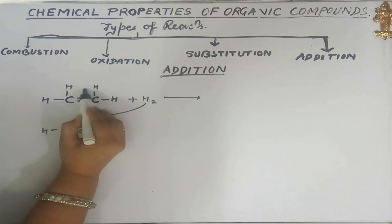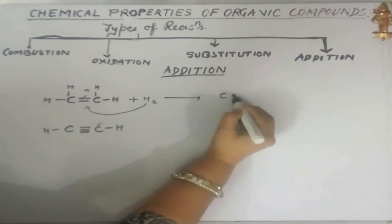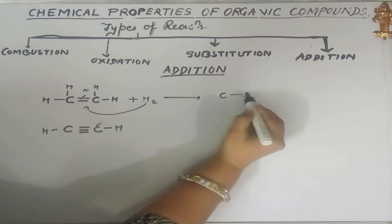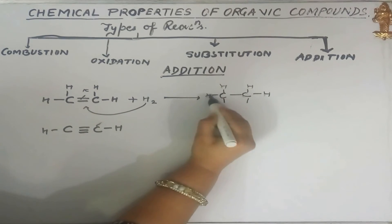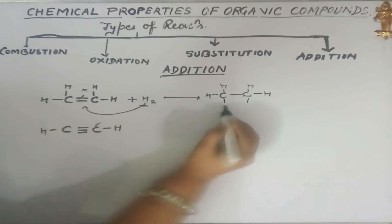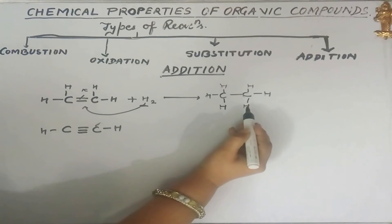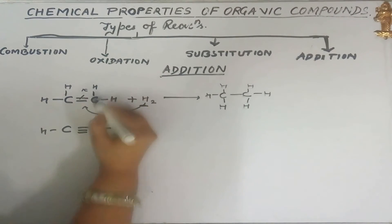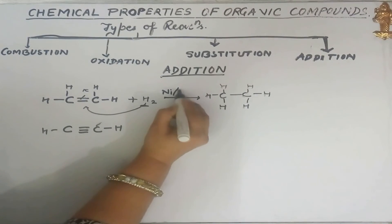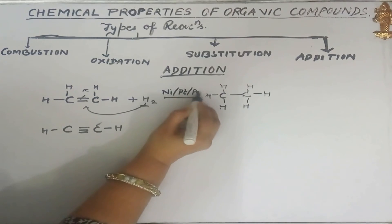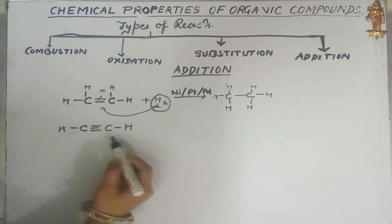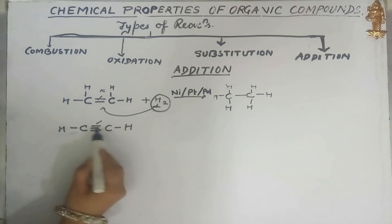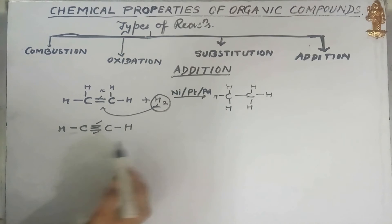When the pi bond breaks, two new valences are created, and hydrogen atoms are added to those valences. The other hydrogen atoms remain unchanged. This reaction takes place in the presence of certain catalysts: nickel, platinum, or palladium. In the same manner, a triple bond also undergoes addition reaction by breaking the first and then the second pi bond, adding hydrogen step by step.